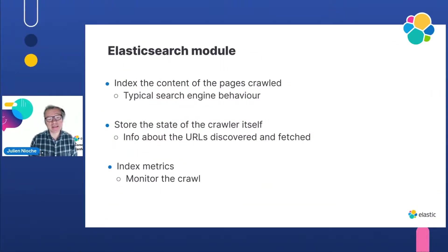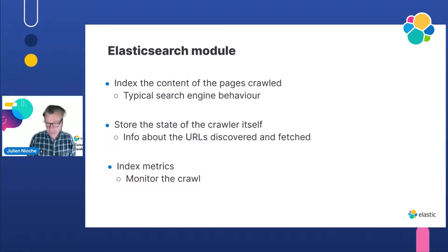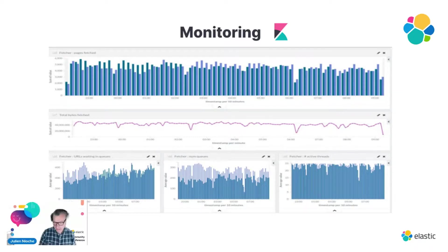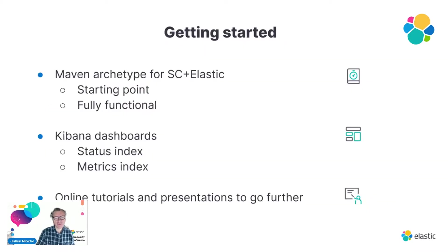Similarly, it also indexes metrics into a specific index in Elastic, and you can use that to monitor the crawl. Here we have a Kibana dashboard displaying the metrics generated by Stormcrawler. We have two workers and we can distinguish the metrics from those two servers in the crawl — a very useful way of monitoring the behavior of the crawl and making sure everything is running fine. You can also use Kibana to display the status index and make sure the crawl is going the way you want.